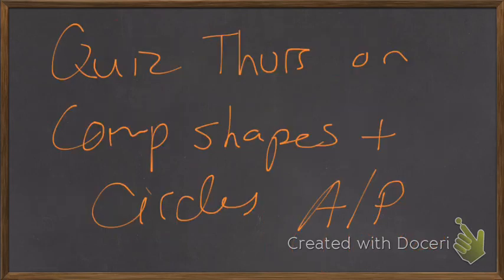One more thing before we go any further. We have a quiz coming up. This quiz will be on composite shapes and circles, the area and perimeter. Keep that in mind on Thursday. What do you think? Okay. Yeah, that sounds good. Circumference.